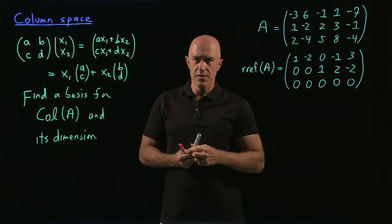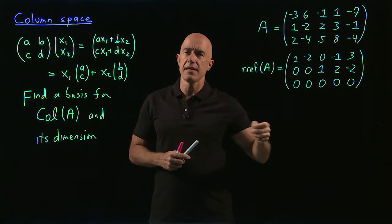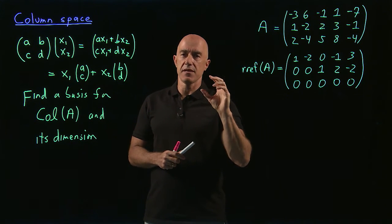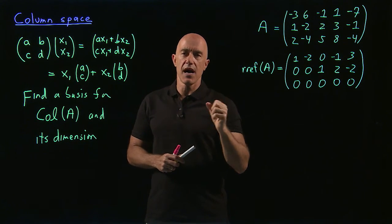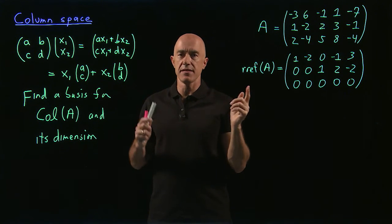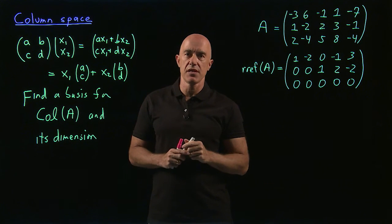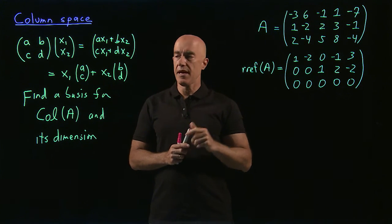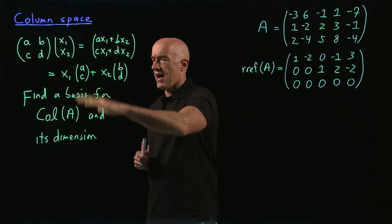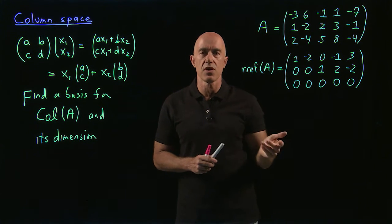Not all columns of a matrix may be linearly independent. So the basis may end up being a smaller number of columns than what the matrix has. All the vectors in a basis are supposed to be linearly independent. I think the easiest way to understand how to find a basis for the column space of a matrix is to work an example.